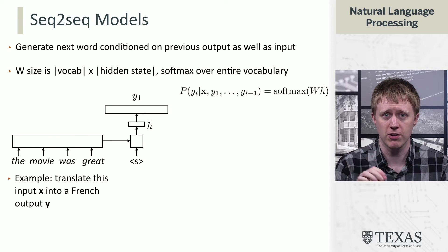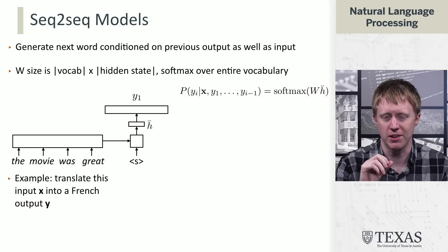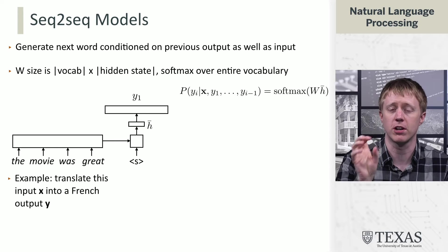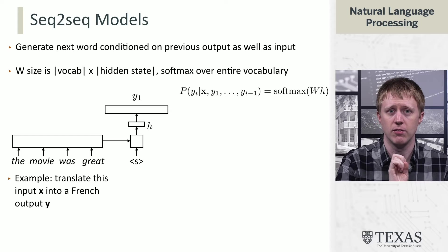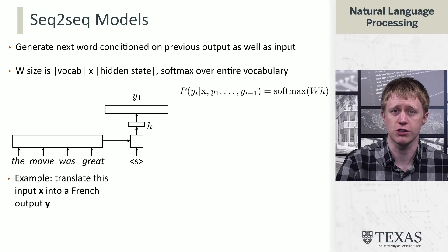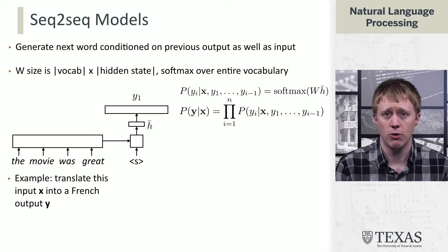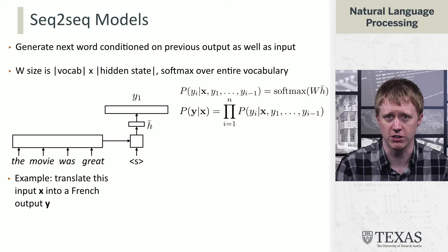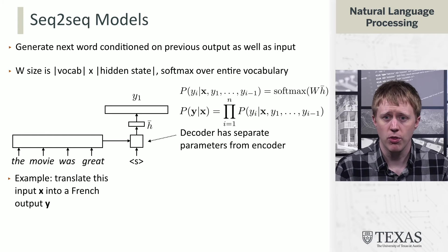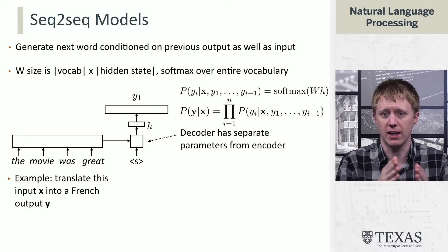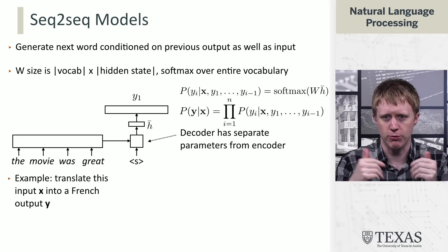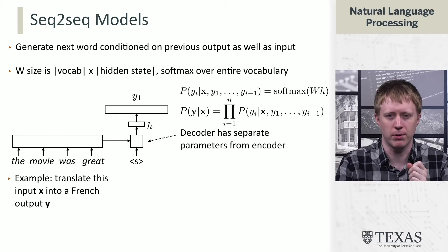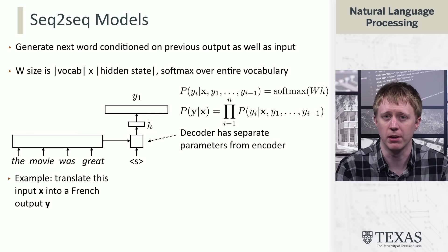Critically, the transformer — and any sequence-to-sequence model — is going to be able to look back at the input and do generation conditioned on what's in the input. We can write the distribution that we get out in a way that looks exactly like a language model, but everything is conditioned on x. A key difference is that we actually have two models: unlike a language model with one transformer, here we have a decoder with separate parameters and can even have a separate vocabulary from the encoder.